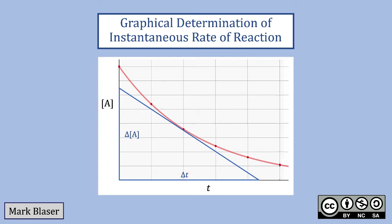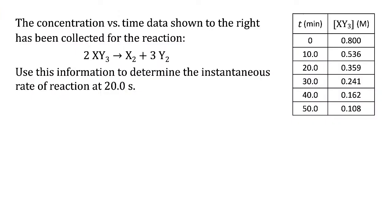Welcome to a screencast on how to graphically determine the instantaneous rate of reaction. For this we're going to use an example where we have concentration versus time data collected for a specific reaction: 2XY₃ makes X₂ plus 3Y₂. We're going to use this information to determine the instantaneous rate of reaction at 20 seconds.